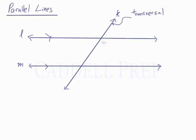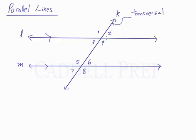Now let's focus on the other angles, taking into consideration the parallel line down here. This set up top is exactly the same as the set down here. Let's label them 1, 2, 3, 4, 5, 6, 7, and 8. The angles up here as a group correspond to those down here — that's what we'll look at first: corresponding angles.